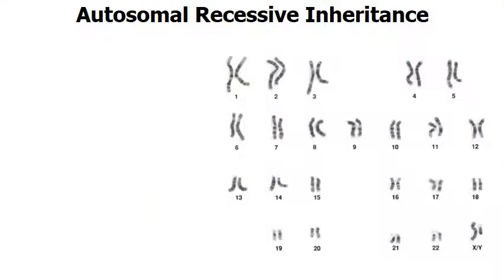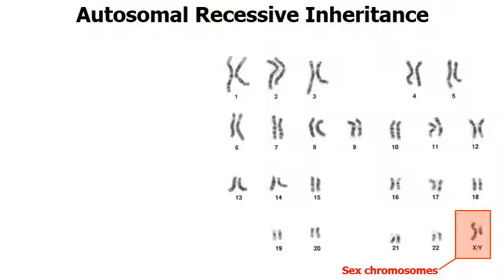You might recognize this picture to be a karyotype — it's a picture of a person's chromosomes. Notice how we have pairs of chromosomes: a pair of chromosome number 1, a pair of chromosome 10. The 23rd chromosome pair are the sex chromosomes. Men have an XY chromosome combination; women have the XX chromosome combination.